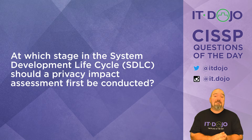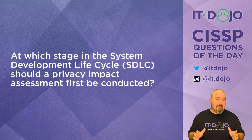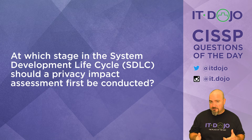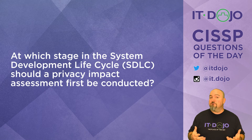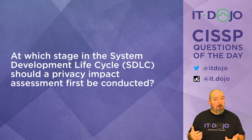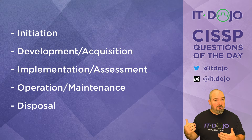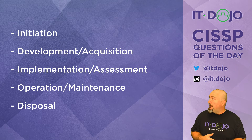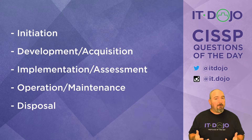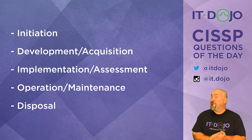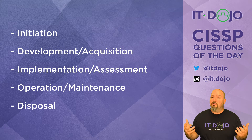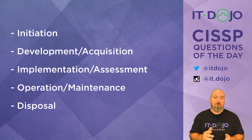Let's move on to question number two. Question number two asks: at which stage in the systems development life cycle would a privacy impact assessment first be performed? I'll give you the list of phases — look them over, think about it, and when you think you have the right answer, click play and we'll talk it through. The correct answer is you are going to do this in phase one, the initiation phase.